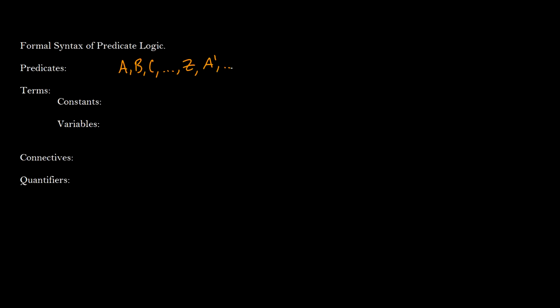Let's talk about the syntax of formal predicate logic. For predicates, which are our properties, we use capital letters A through Z, and we might even use primes A' through Z'. For terms — our abstract idea of an object — we have constants (a through roughly t) and variables (x, y, z, and occasionally w, u, and v).